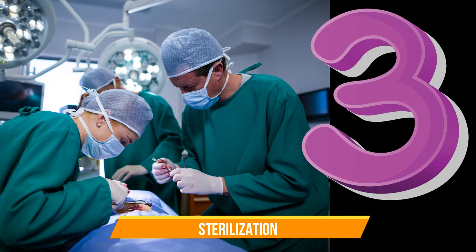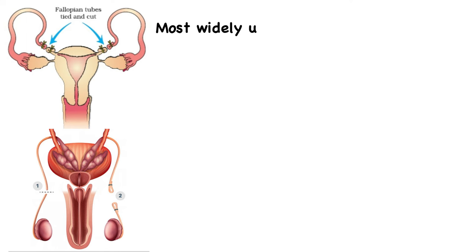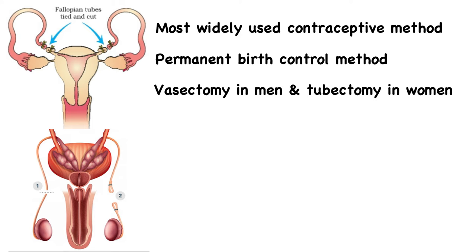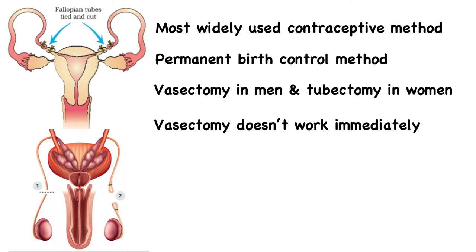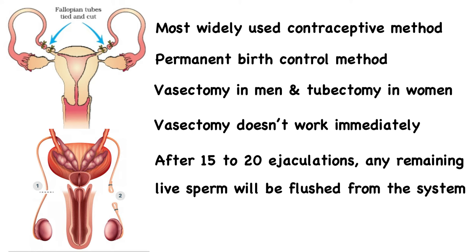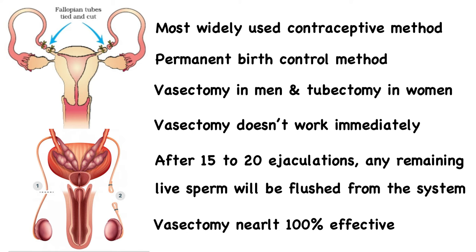The third method is sterilization. This is the most widely used contraceptive method in the world. It is a permanent birth control method that includes vasectomy in men and tubectomy, that is tubal ligation, in women. A vasectomy doesn't work immediately — it requires 15 to 20 ejaculations for remaining living sperm to be flushed out, after which it is nearly 100% effective.